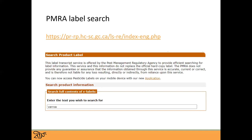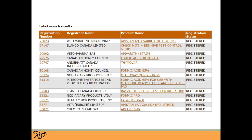If you need to look up a label for any treatments registered here, you can go to the PMRA website — the Pest Management Regulatory Agency. That will have a list of all the chemicals registered in Canada, as well as a link to the instructions on how to use each of them. If you type 'Varroa' into their label search, you should find a list of all products registered in Canada and be able to open up the instructions.